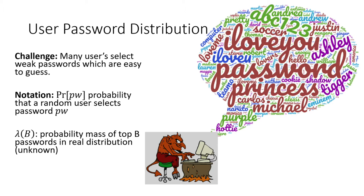A bit of notation: given a password, we write the probability that a random user selects that password. We denote lambda(b) to be the probability mass of the top b passwords in the password distribution. The password distribution might be unknown, but we have lots of samples from it.